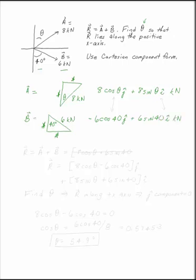So those are our two forces in Cartesian component form. Now we want to find the resultant. The resultant of A and B is adding up the i's and adding up the j's.